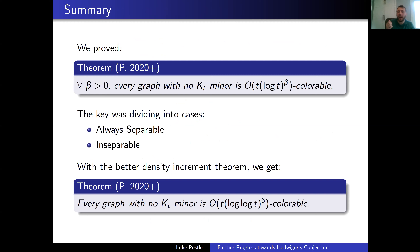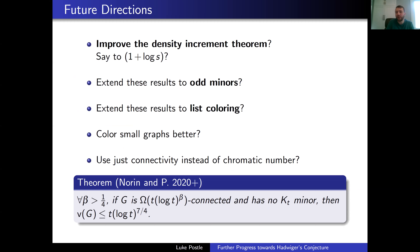Summary: we proved that for every beta > 0, every graph with no Kt minor is O(t (log t)^beta) colorable — and with the better density increment theorem, the actual bound is O(t (log log t)^6) colorable. Key ideas: dividing into the always-separable and inseparable cases, using chromatic number as a resource via the Giroud-Narayanan theorem, and the improved density increment theorem. Future directions include improving the density increment theorem, possibly down to a log or even constant error. Unfortunately this proof doesn't directly extend to odd minors or list coloring — almost all of it works, but there are sticking points in both cases.